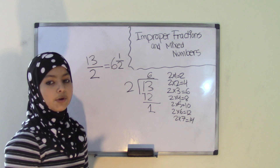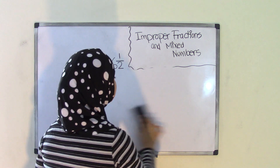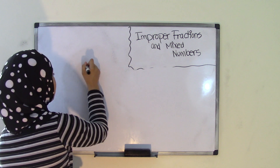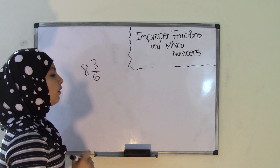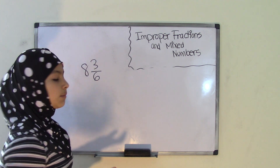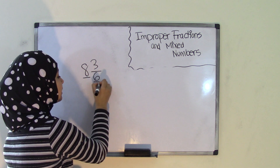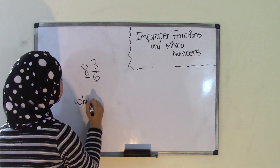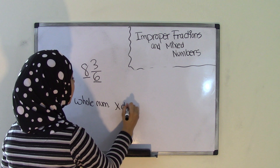Now what if you had a mixed number and you had to convert that into an improper fraction? Let's take the mixed number 8 and 3 over 6. In order to convert this into an improper fraction, all you have to do is multiply your whole number — which is 8 — by the denominator, which is 6. So the formula is: whole number times denominator, plus the numerator.